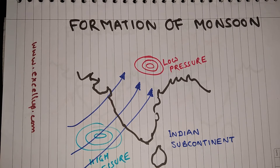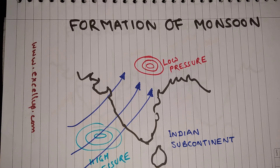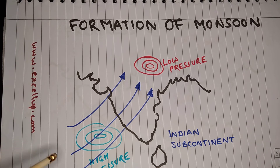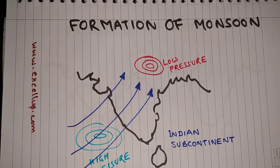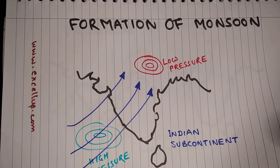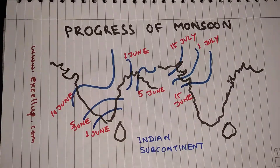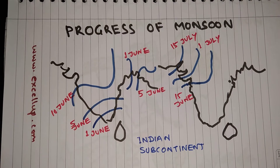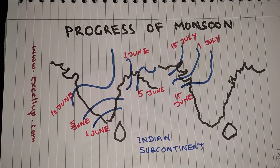It is said that nature abhors a vacuum, so to fill the area of low pressure, moist wind from the Arabian Sea moves towards the subcontinent. This moist wind from the ocean is called the monsoon. Since the Arabian Sea is towards the south west of India, this is called the south westerly monsoon.